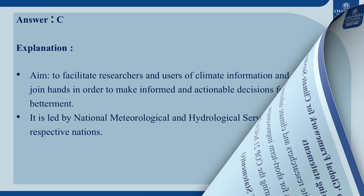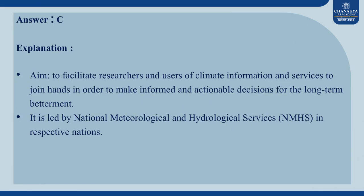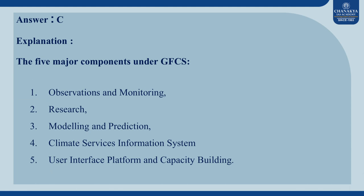The aim of the Global Framework for Climate Services is to facilitate researchers and users of climate information and services to join hands in order to make informed and actionable decisions for the long-term betterment. It is led by national meteorological and hydrological services in respective nations. The 5 major components under GFCS are Observations and Monitoring, Research, Modeling and Production, Climate Services Information System, and User Interface Platform and Capacity Building.